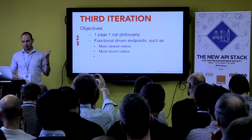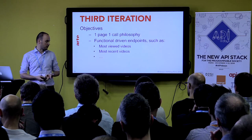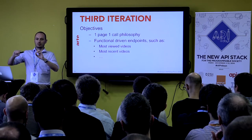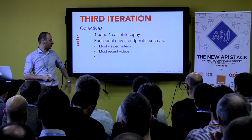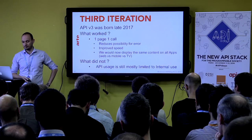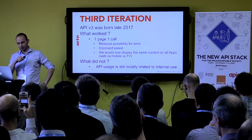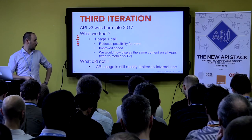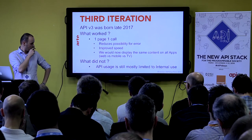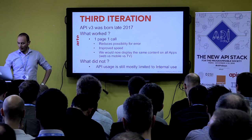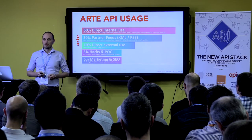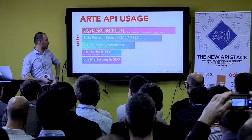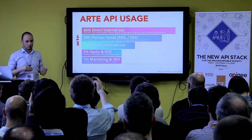The third iteration was born late 2017. This really worked well — the philosophy worked. It improved speed, reduced errors, and now displayed the same content on all apps. What did not work well: looking at a graph of our API usage, we're still pretty much reliant on pure internal use. Direct external use is only about 10% of our traffic. We hope to improve this in the future.